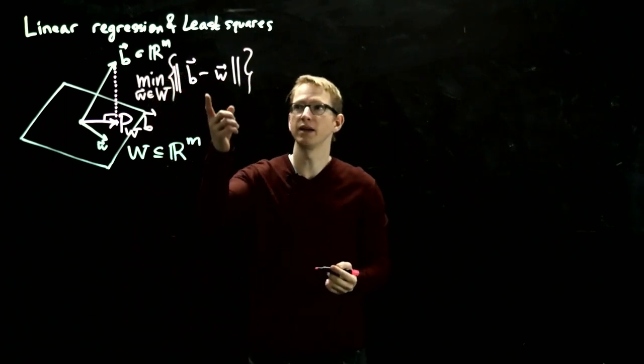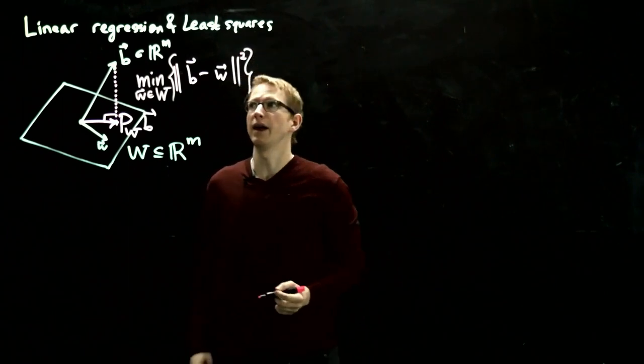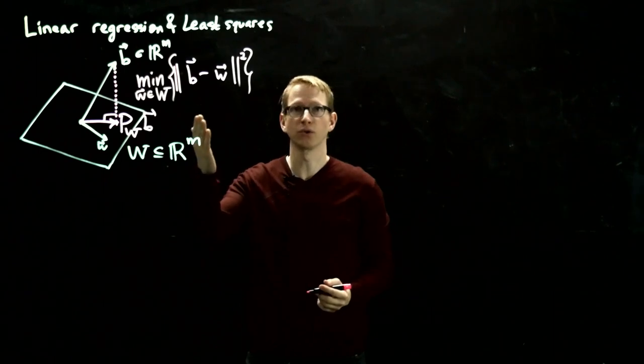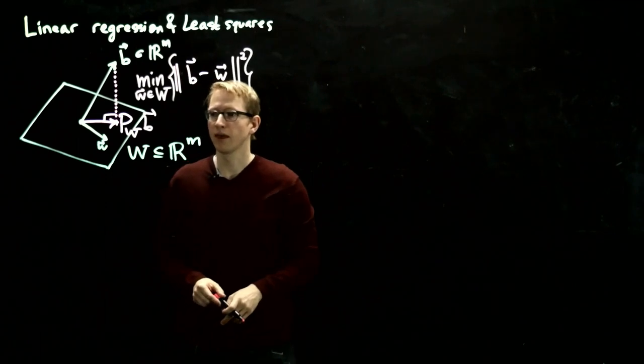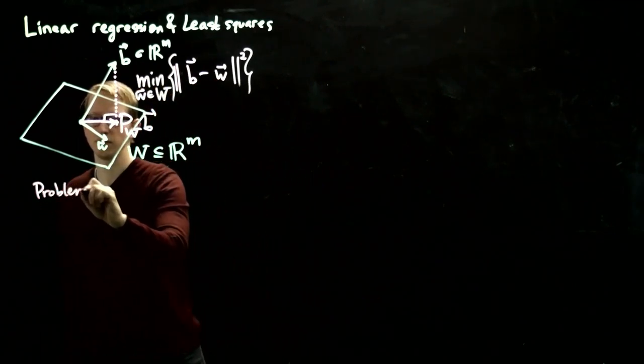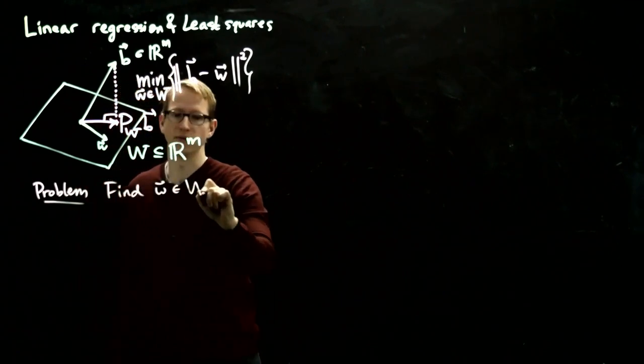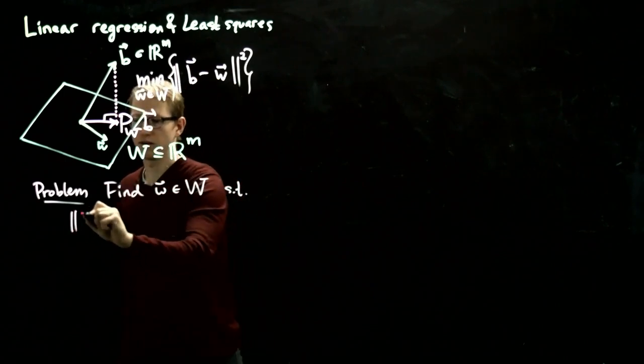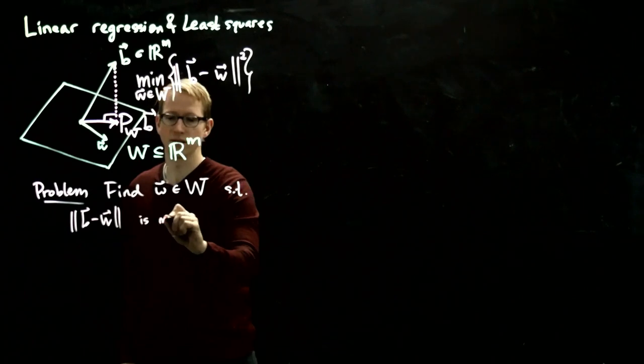Equivalently, you can minimize the square of the distances, and this is why this problem is called least squares, because we're minimizing the squares of each of the components of these differences when you add them all up. So that's the statement of the problem: to find w inside of W such that the distance ||b - w|| is minimized.